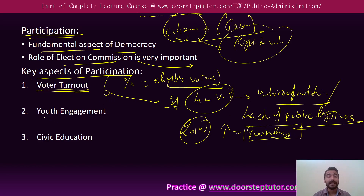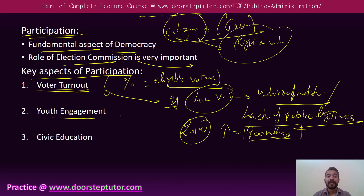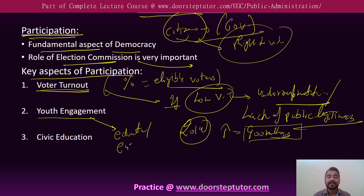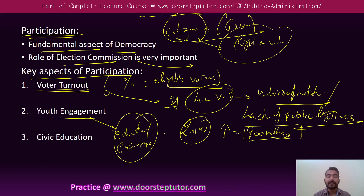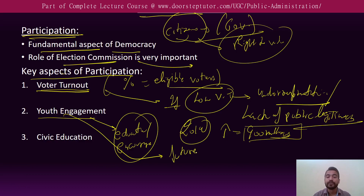The second aspect is youth engagement, which is a very crucial part of electoral politics. Various efforts have been made by political parties and candidates to educate and encourage young people to participate in elections, because youth are the future of democratic decision making.